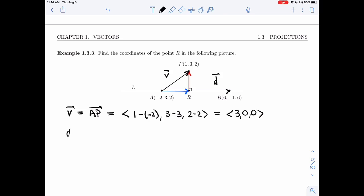I want to find D now. D is AB. So it's 6 minus minus 2, minus 1 minus 3, and 6 minus 2. So I get 8, minus 4, 4.